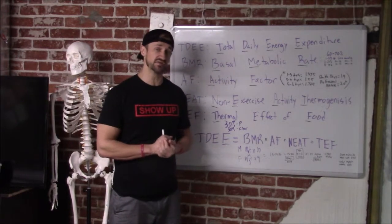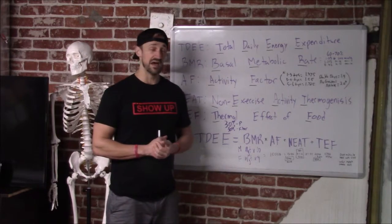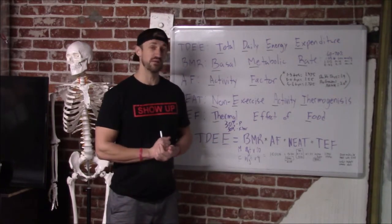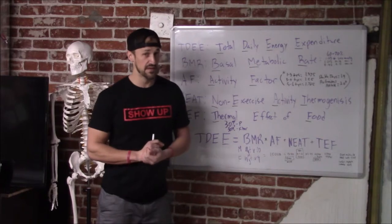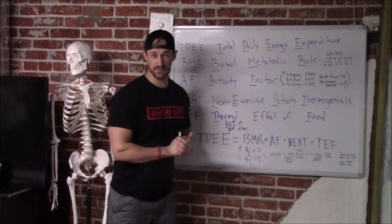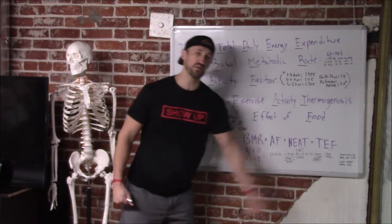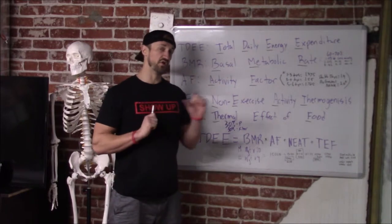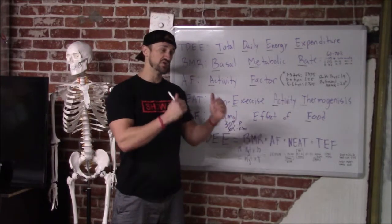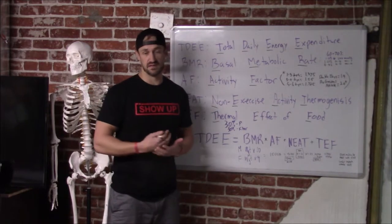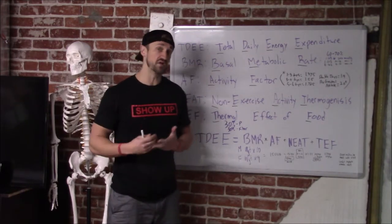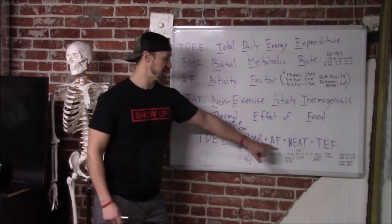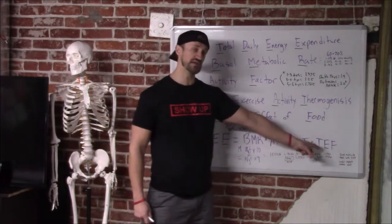The two suggestions we give to our clients at Show Up Fitness when they want to start working on their diet: I'm going to tell them to track their food for a week. Once they've done that — it usually takes about two months — then we'll start talking about quality of food. The equation is BMR times activity factor, plus non-exercise activity thermogenesis, plus thermal effect of food. Protein and water — those are the two things that we suggest for people.